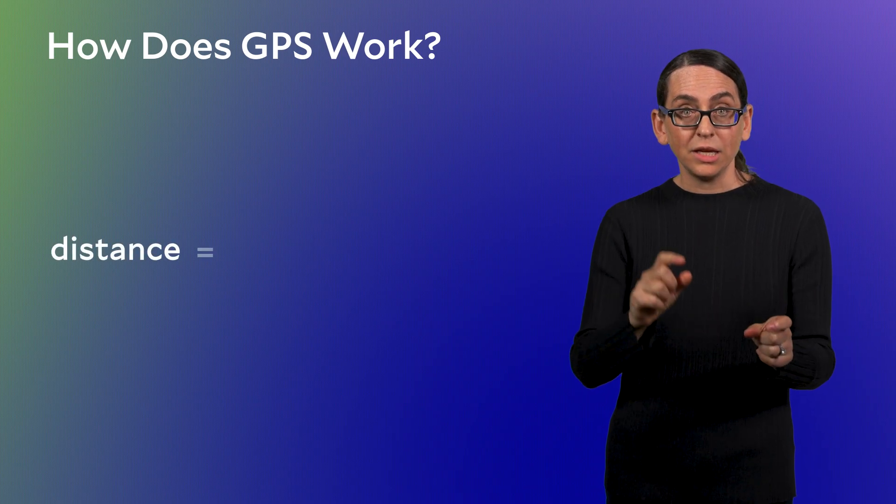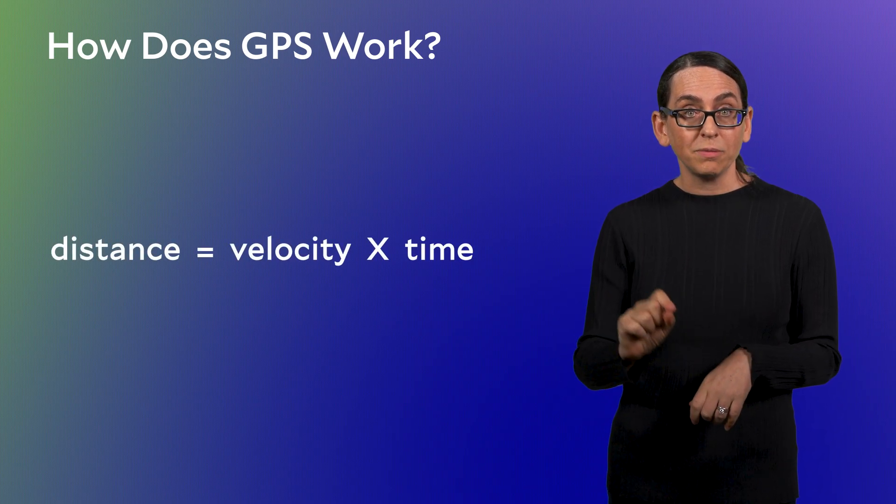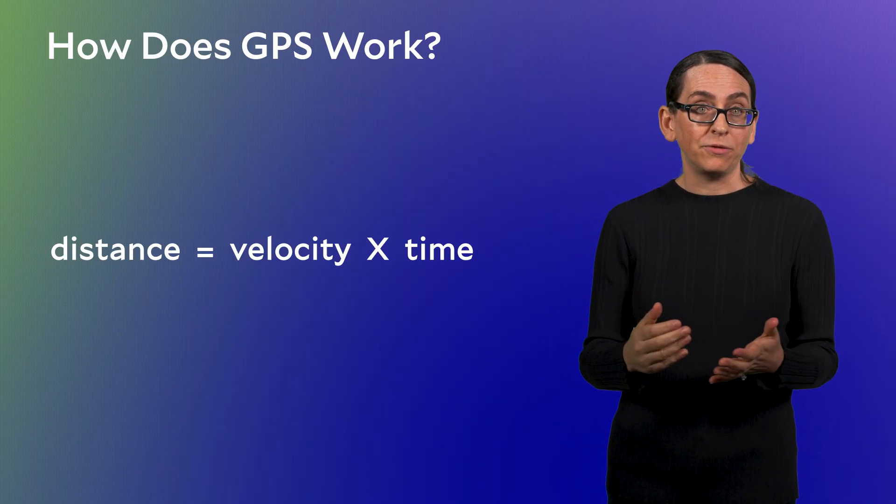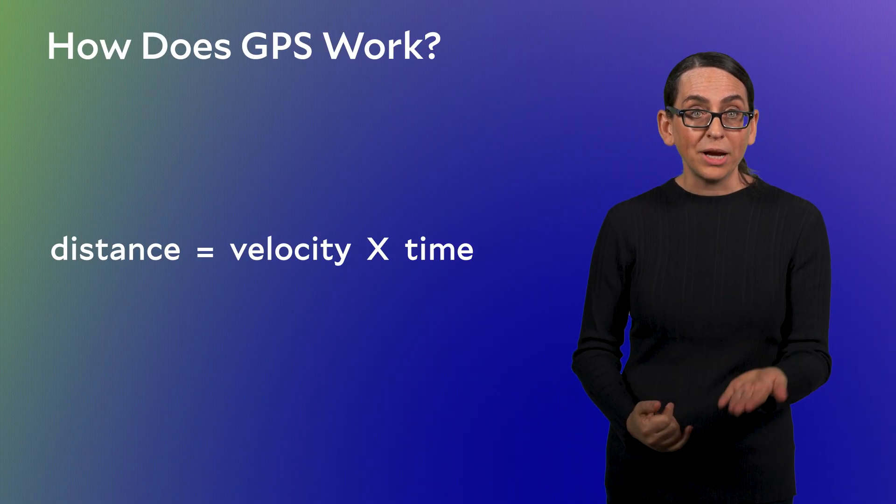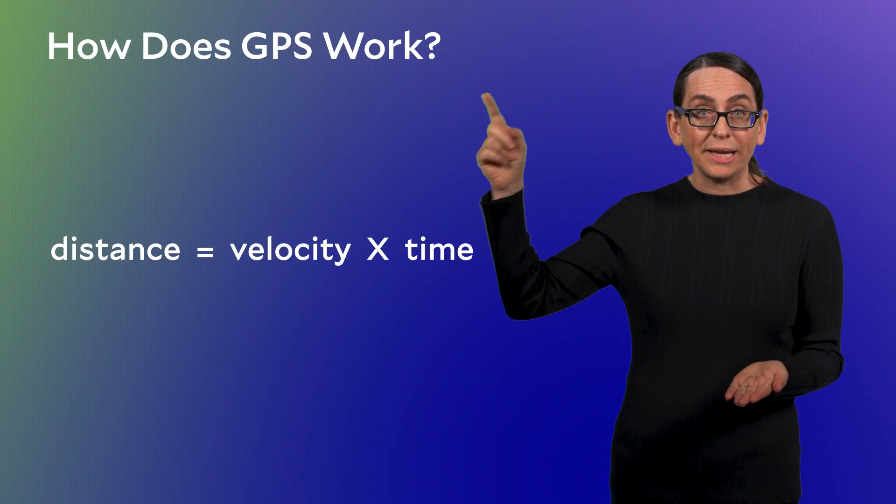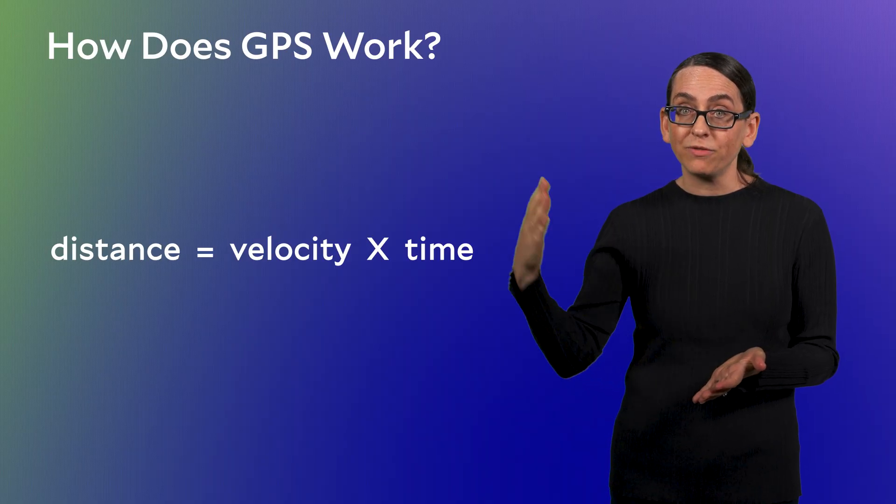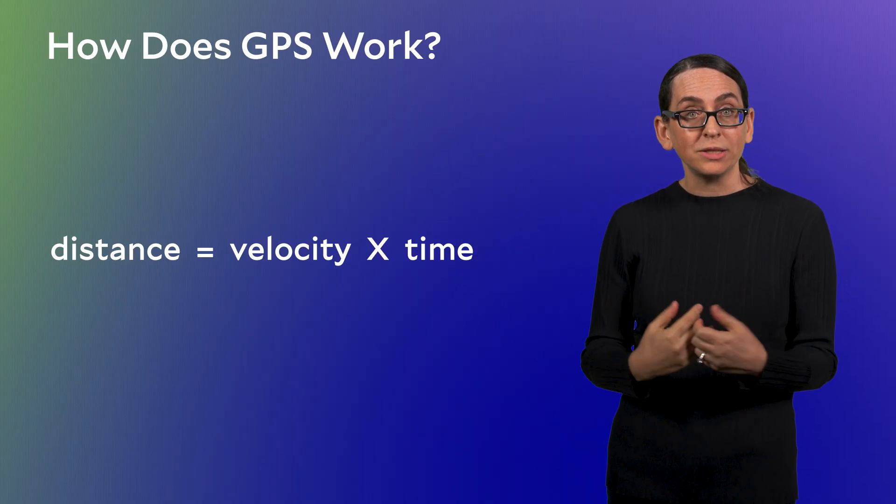I can use that difference in time, the difference between when the satellite says it broadcast a signal versus when I receive the signal, to determine the distance to the satellite. That is, distance equals velocity times time. I know the time it took the message to travel to me, and I know the velocity at which it traveled, the speed of light. So I can compute a distance. That's amazing. I can measure my distance to a satellite in medium Earth orbit. Because the satellite knows its position very accurately, I can start to figure out my own position relative to this point.